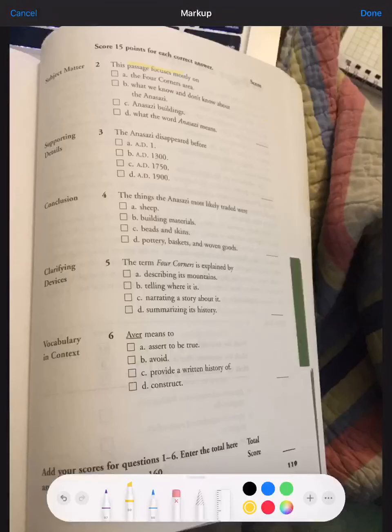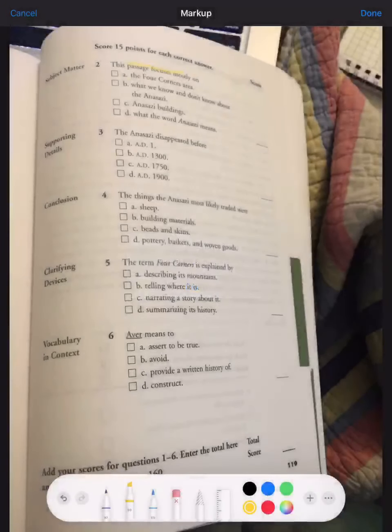The Anasazi disappeared before A, AD 1, B, AD 13, C, AD 1750, or D, AD 1900.